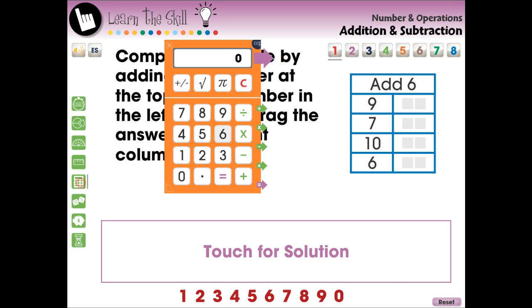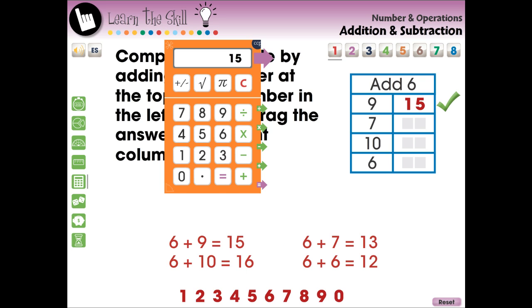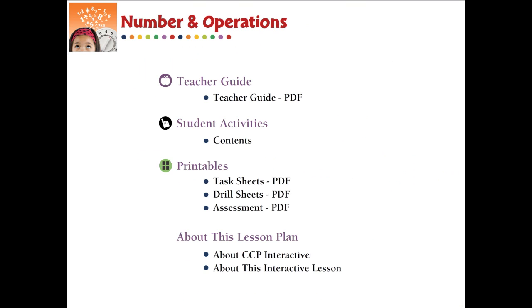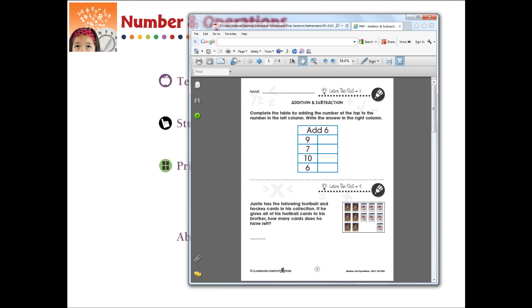The Learn the Skill section contains eight screen pages of real-world task problems. These questions include a touch-for-solution option to give a step-by-step of how the answer is reached. These questions are delivered in the form of fill-in-the-blank and touch questions. Printable PDF versions of the task questions are available at the menu screen.